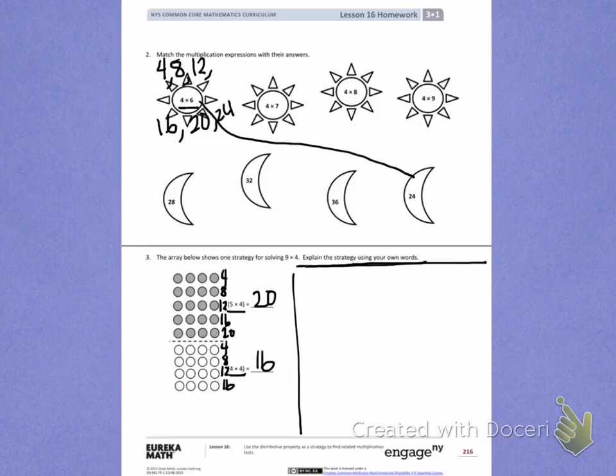If I look at the problem all together, I have a total of 9 rows of 4. So if I were going to find the answer for 9 times 4, I would take the answers for 5 times 4 and 4 times 4 and add them together. 20 plus 16, which would give me 36. So taking these two smaller answers and adding them together gives me the total for 9 times 4.